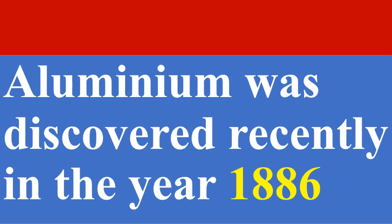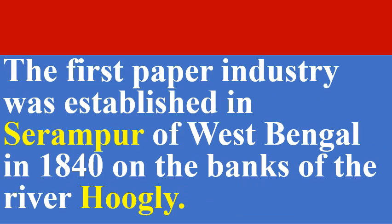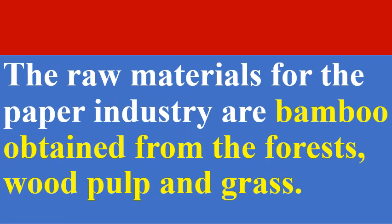Aluminium was discovered recently in the year 1886. The first paper industry was established in Srirampur of West Bengal in 1840, on the banks of the river Hugli. The raw materials for the paper industry are bamboo obtained from the forest, wood pulp, grass, freshwater, and chemicals.